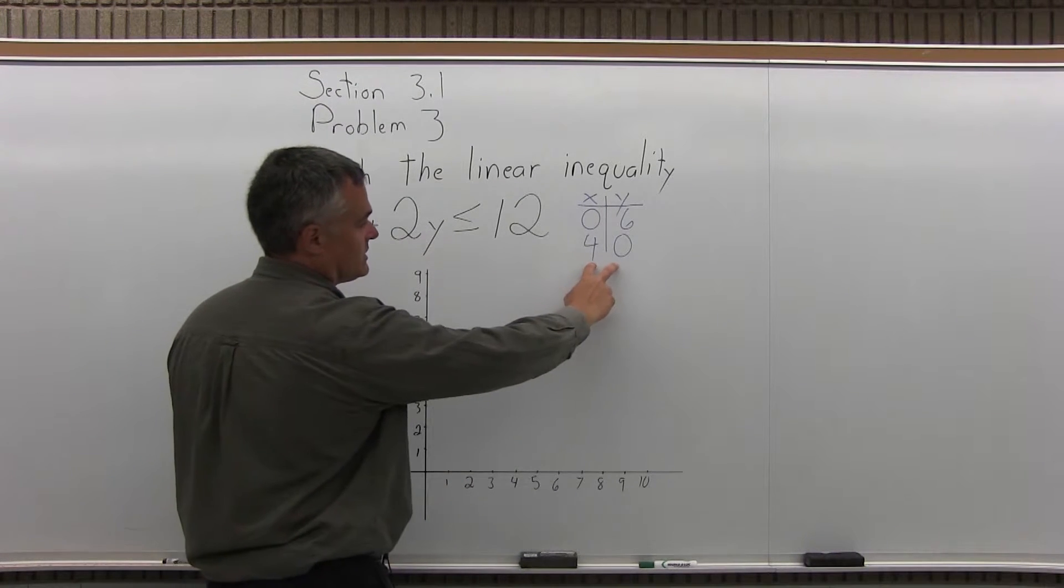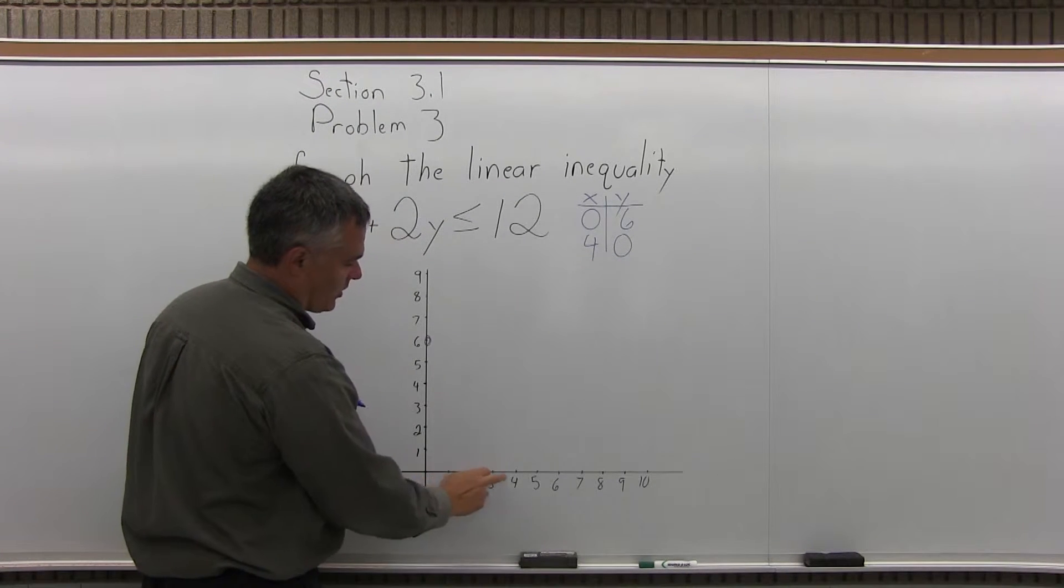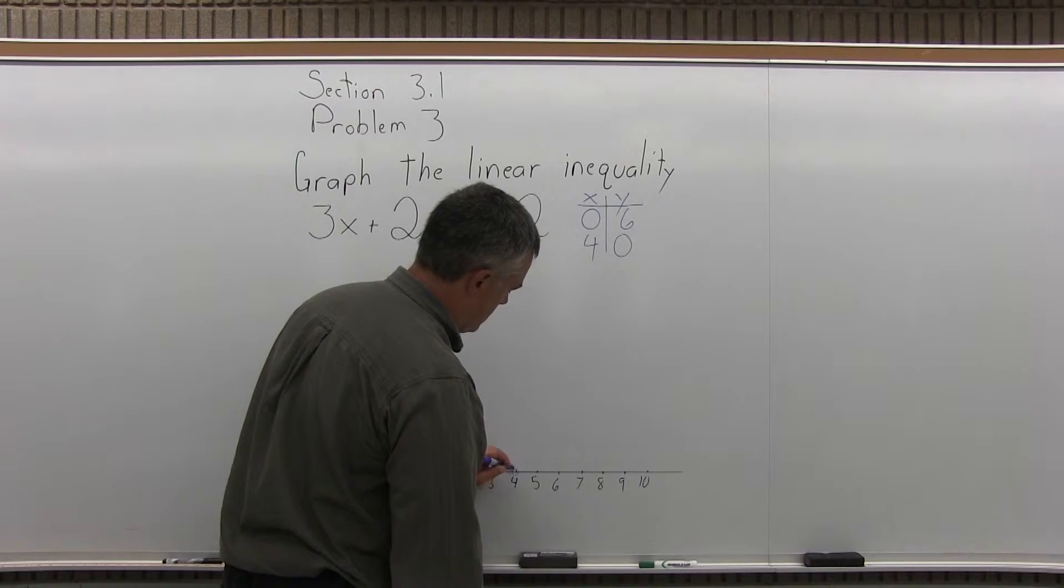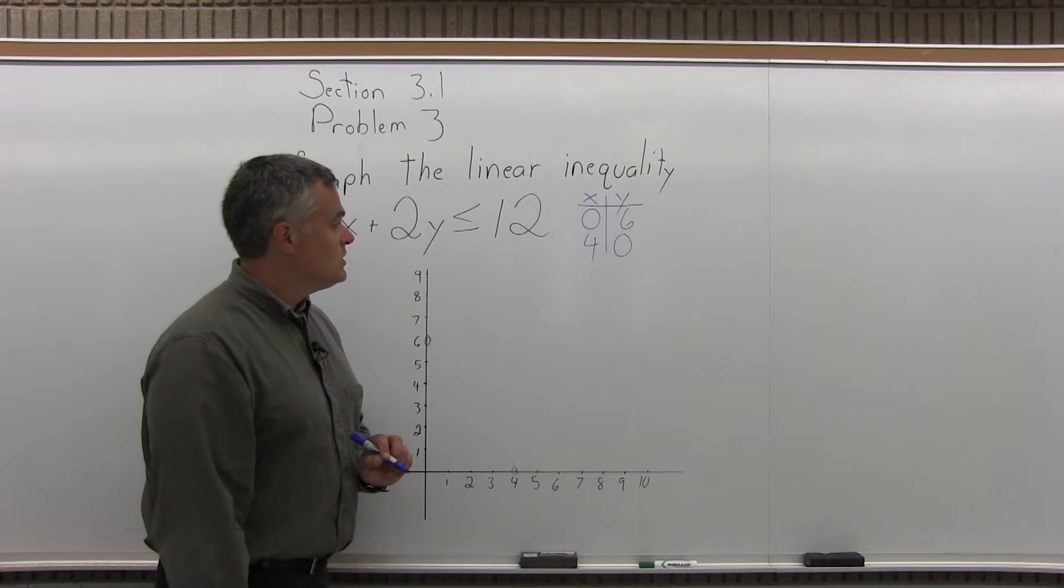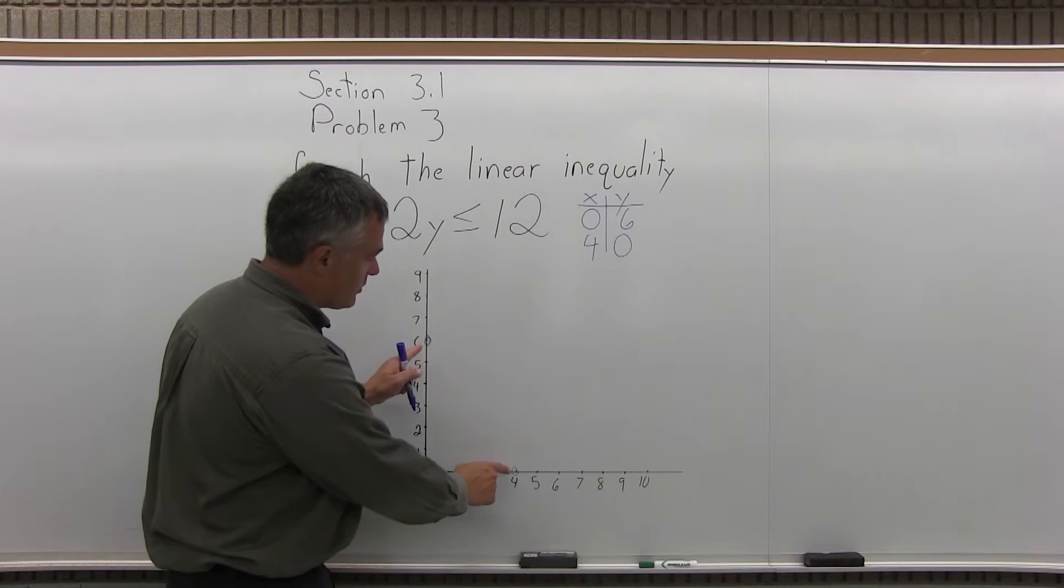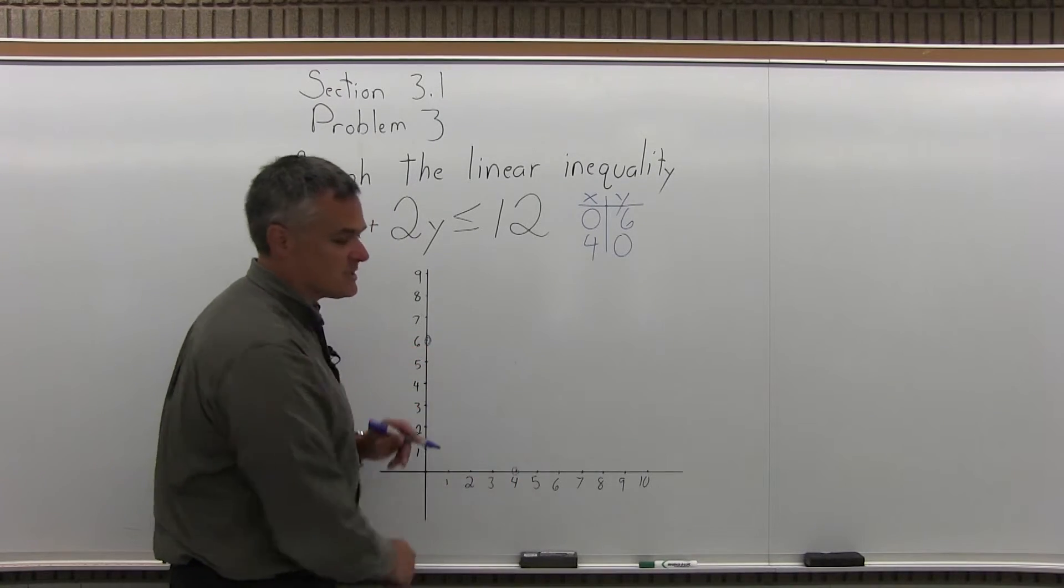And the other point, 4, 0, if I start at the origin, I go over 4, up 0. And there's the other point right there, 4, 0. So that's step 2. Plot the 2 points from step 1 on a graph. So step 2 is good.